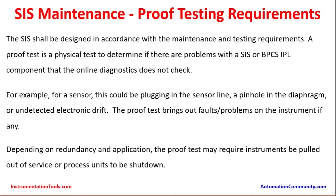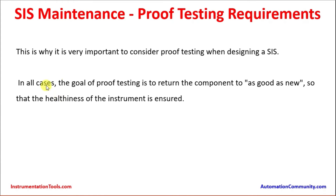Depending on redundancy and application, the proof test may require some instruments to be pulled out of service or the process to be shut down. If there is a 1oo1 configuration and proof testing cannot be done online, it may call for shutdown of a part of the plant or equipment. This is why it is very important to consider proof testing when designing a Safety Instrumented System. The goal of proof testing is to return the component to 'as good as new' condition, resetting it for the next calculated interval.